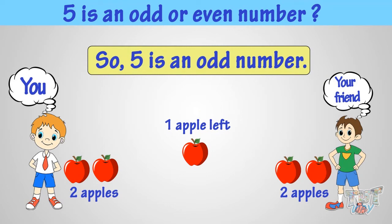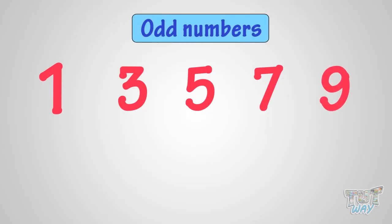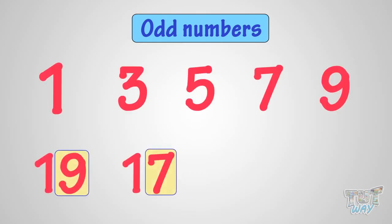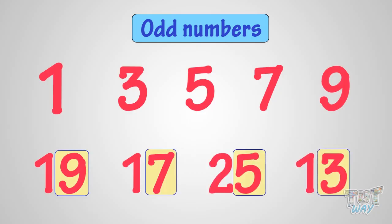Now, don't forget. 1, 3, 5, 7, and 9 are odd numbers. And all numbers ending with them, like 19, 17, 25, and 13, are odd numbers. Good.